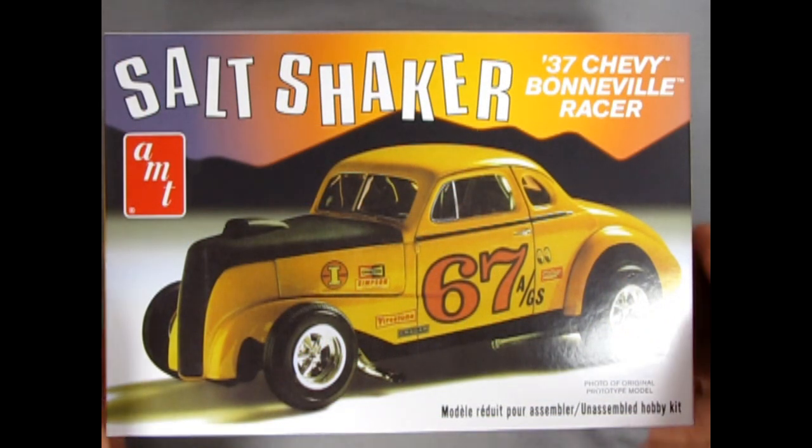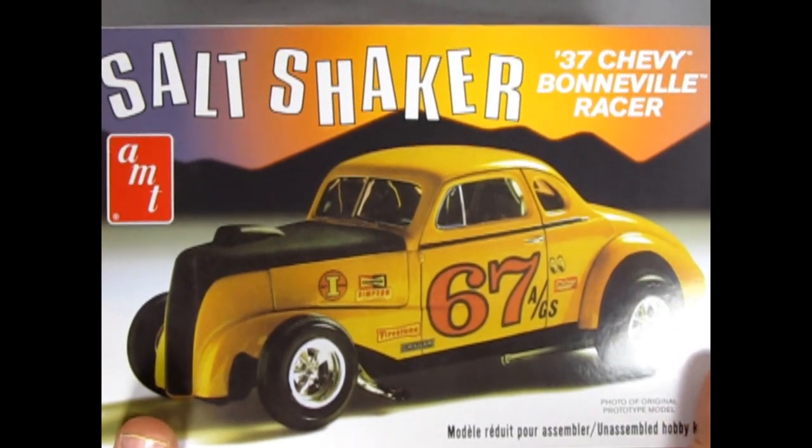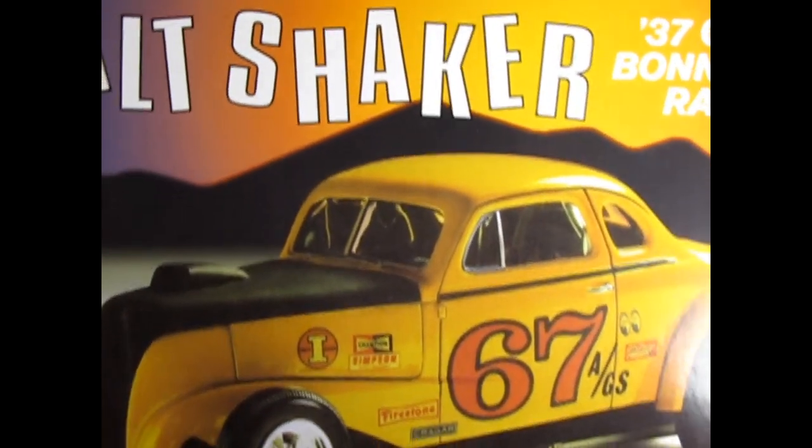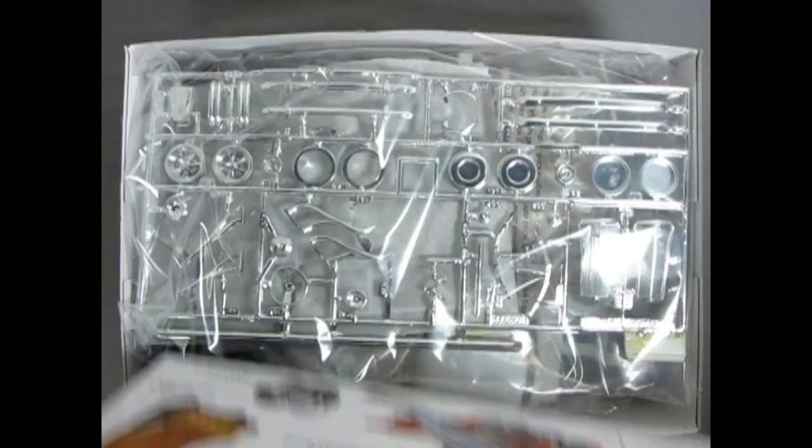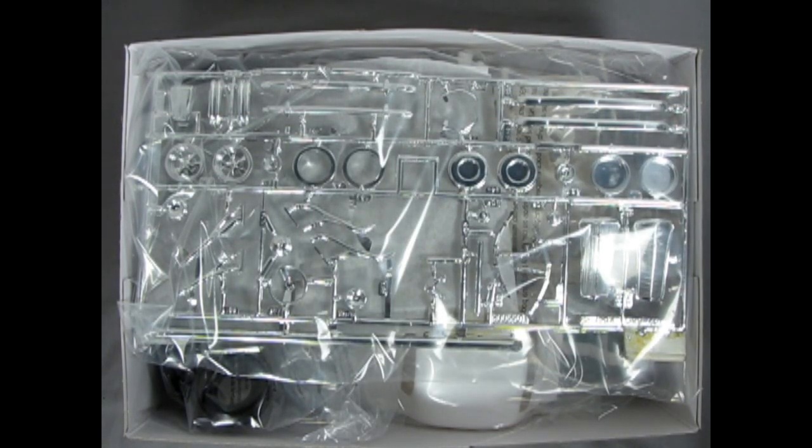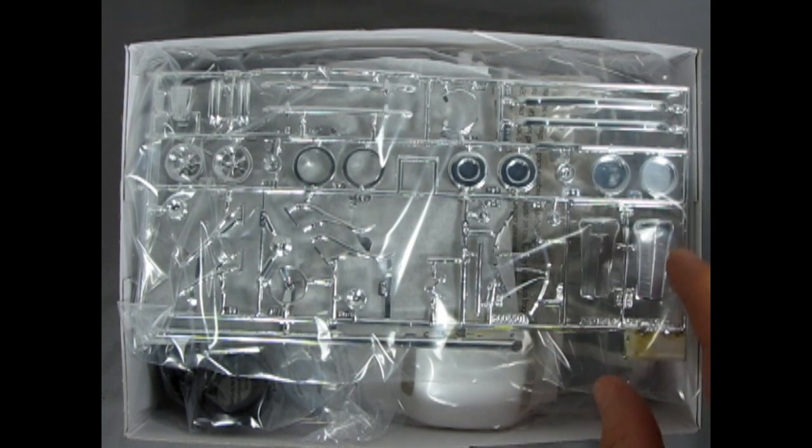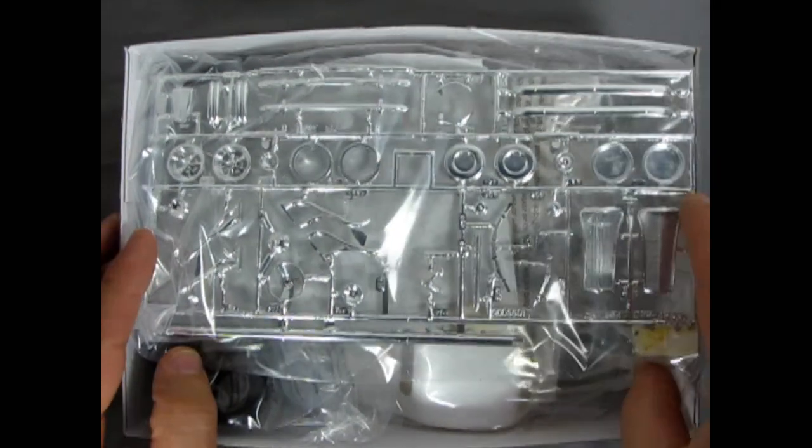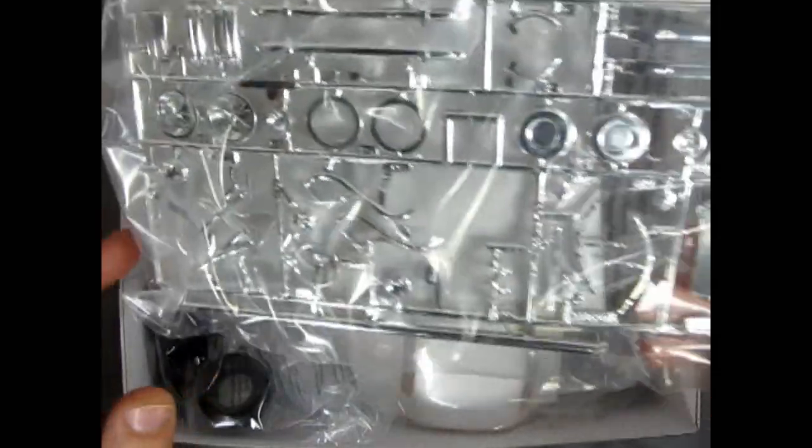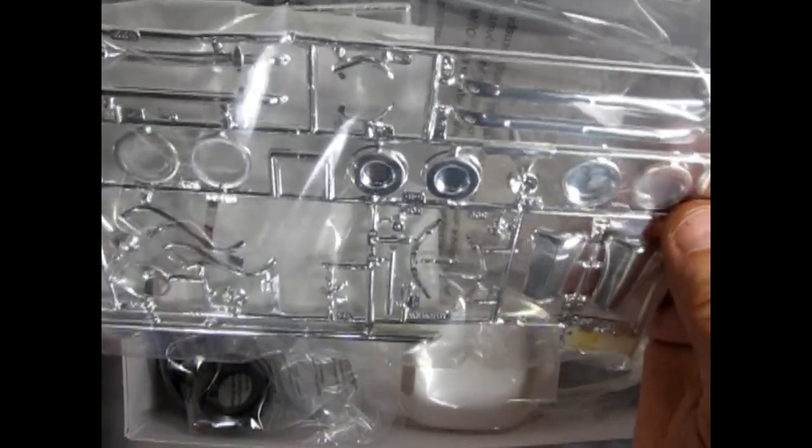All right so now let's take the lid off this box and see what's inside. I am anxious because I always wanted to get the coupe. And what do we have? We have the full-on chrome parts tree and this is really cool. Look at those.